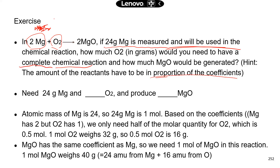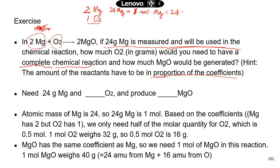Based on the chemical reaction, we know that for one mole of oxygen, we've got to have two moles of magnesium. So if we have 24 grams of magnesium, how many moles is that? That's one mole, because one mole of magnesium is 24 grams.